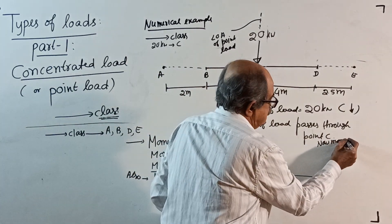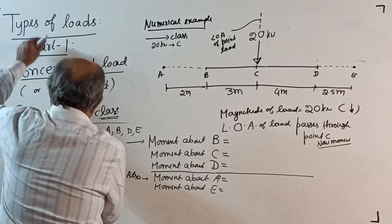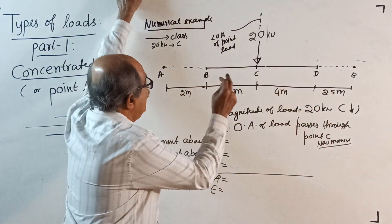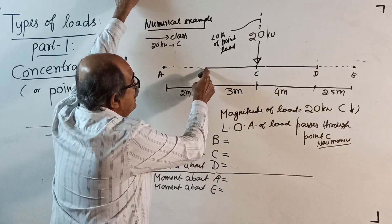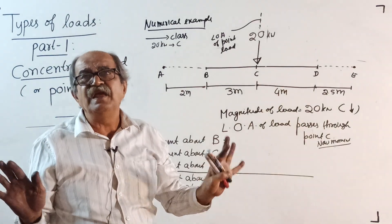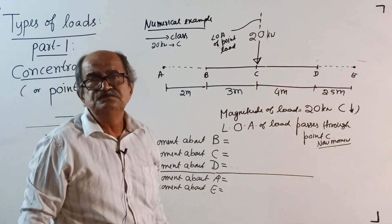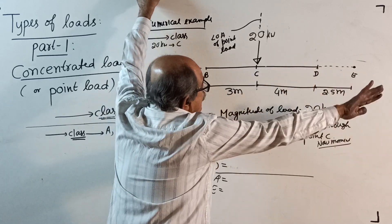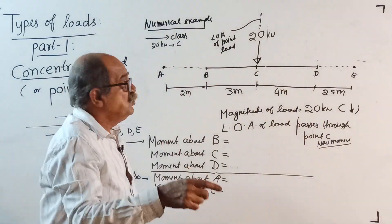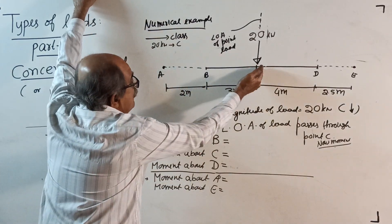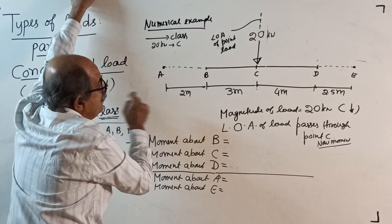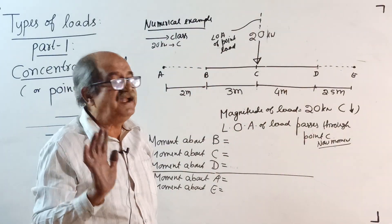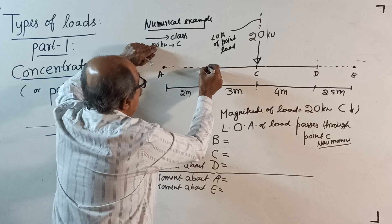Consider a point at 3 meters to the left of C — call it B. Do not memorize A, B, C, D by heart; tomorrow I can put A here and B there. Considering another point D at 4 meters to the right of C. One more point A to the left of C, after B, further left by 2 meters. One more point E to the right of D, after D, further by 2.5 meters. Now start: moment about B.